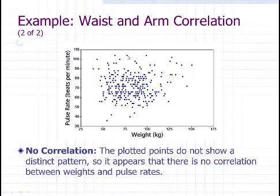The person represented here is about 75 kilograms, and their heart rate is between 100 and 110 beats per minute. So that's how we get those points on our scatter plot.